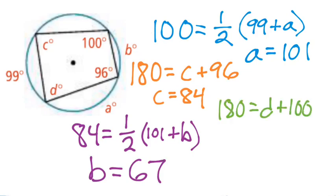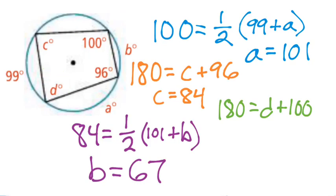Finally, angle D is opposite the 100-degree angle, so opposite angles are supplementary. 180 equals angle D plus 100, so subtracting 100 from both sides gives D equals 80 degrees. I hope this video has helped — please let me know if you have any questions by leaving a comment below, and I'll see you next time.